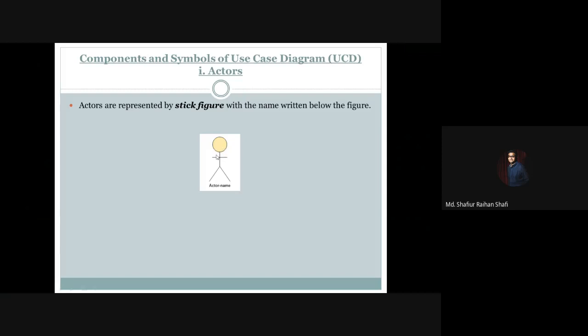Now let's take a look at what symbol is used to represent actors in a use case diagram. Actors are represented by a stick figure with the name written below the figure. In a use case diagram, the actor is represented using the stick figure symbol. This is called the stick figure symbol, and the name of the actor is written below the stick figure.